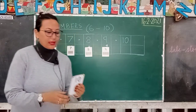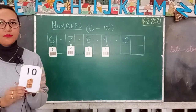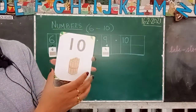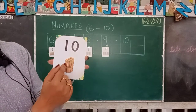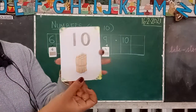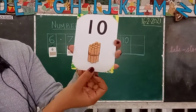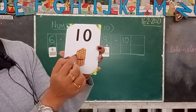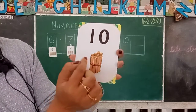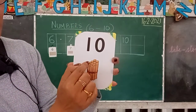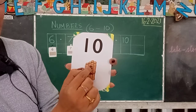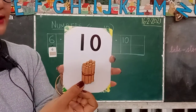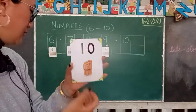After 8 comes number 9. Let's count the sticks: one, two, three, four, five, six, seven, eight, nine — number 9. After nine comes number 10. If you count the sticks here, there are ten sticks: one, two, three, four, five, six, seven, eight, nine, ten. Number 10.